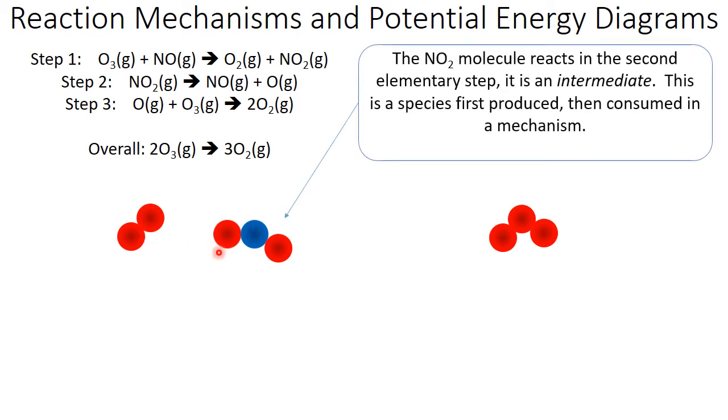This NO2 molecule is going to react in the second elementary step. That means it's an intermediate species. These are species that are first produced, then consumed in a mechanism. So let's take a look at that second step.